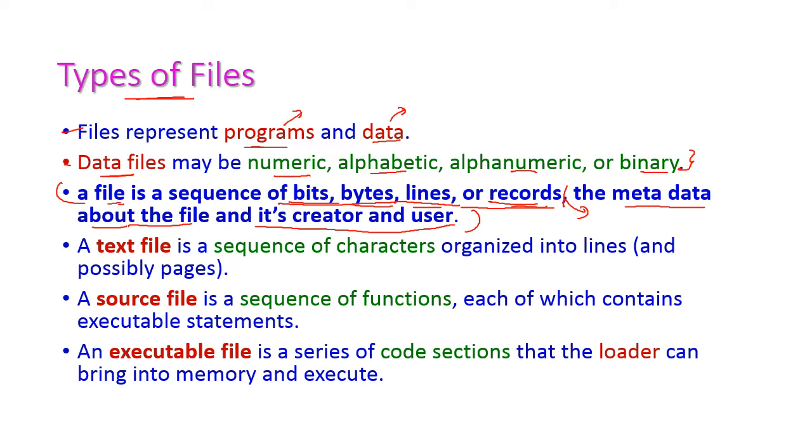Here we are having some different types of files. First one is text file. A text file is a sequence of characters, that is alphabets, numeric, alphanumeric characters. Those are organized into lines and pages. The collection of lines will form pages and collection of pages will form a file. This is called a text file.